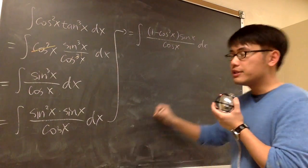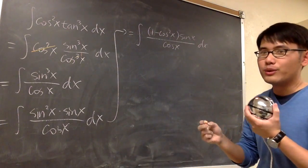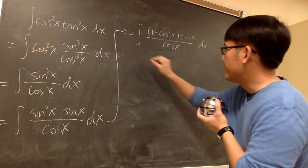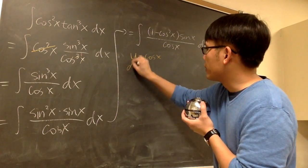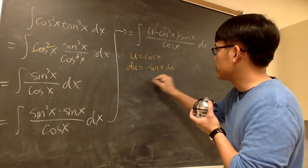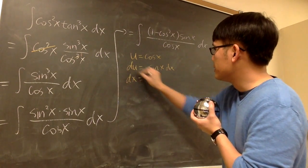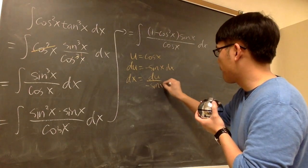And now, as you can see, we have a lot of cosine here, and then we have a sine x. On the numerator, we can use a u substitution. We can let u equal cosine x, and then that will give us du will be negative sine x dx. So in other words, dx will be du over negative sine x.